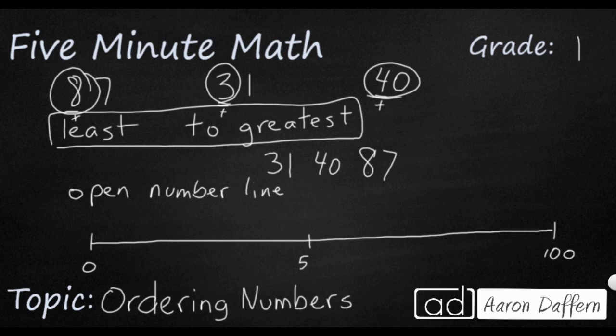So halfway between zero and 100 is 50. Think of a dollar is 100 cents, and half the dollar is two quarters or 50 cents. So I'm going to use those three points there to kind of help me with this 31, 40, and 87. So where would those numbers go?